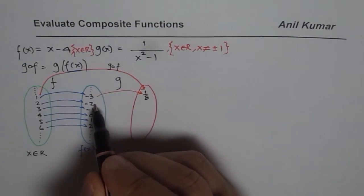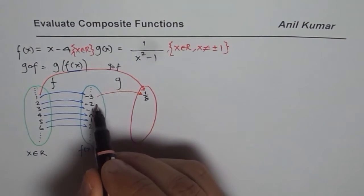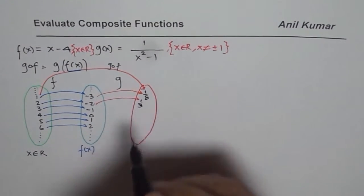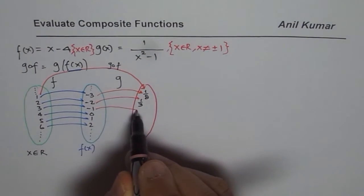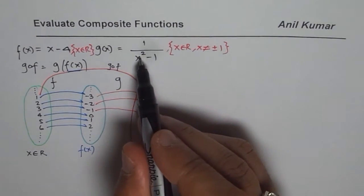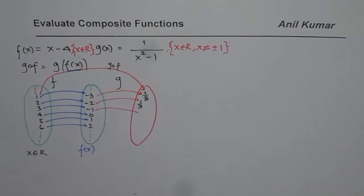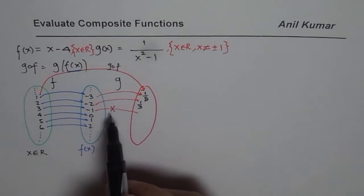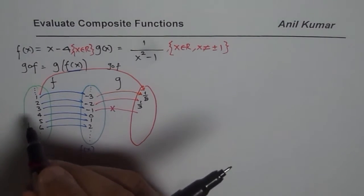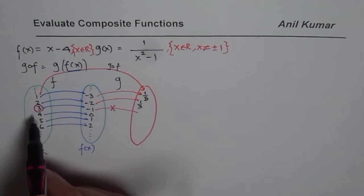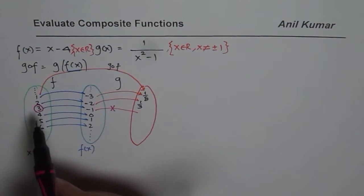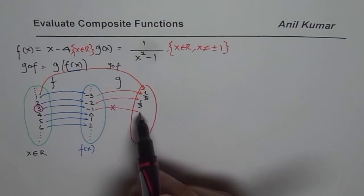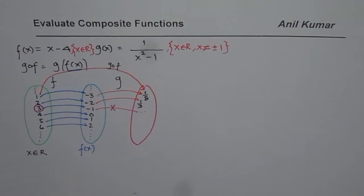For each number in the range of f, we calculate g of x. If I substitute 2, I get 1 over 2 squared minus 1, which is 1 over 3. If I substitute minus 1 — minus 1 squared is 1, and 1 minus 1 is 0, so we get 1 over 0, which is not defined. So this particular range value of f does not work. That means 3, which is in the domain of f of x, cannot be in the domain of g of f.